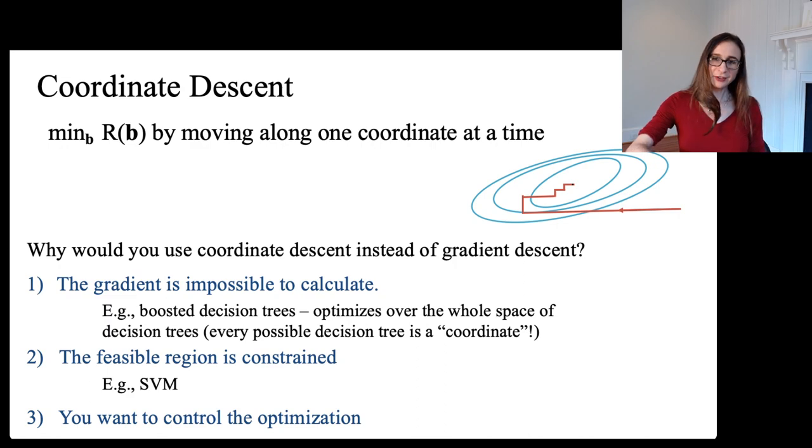And then the third reason why you'd want to do coordinate descent as opposed to gradient descent is because you might want to control how the optimization works. And it's easier to control if you just move one direction at a time as opposed to moving along the whole gradient. There are various algorithms that try to change things like the convergence rate by adjusting how far in each direction they move.